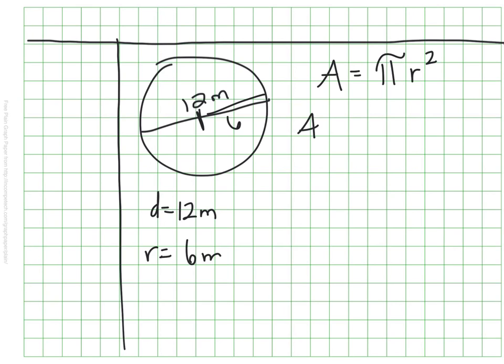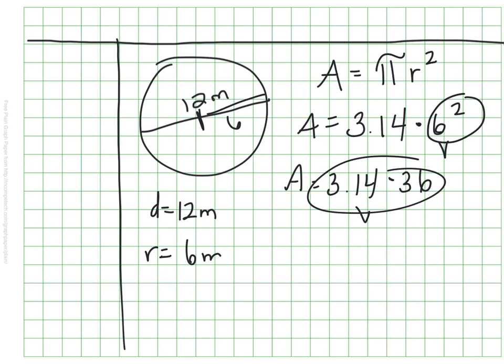So from there, once you know that, you can go ahead and follow the rest of the steps where you would take your radius, and since exponent comes first in PEMDAS, you would do that part first, and multiply it by our representation of pi to get our final answer, which is about 113 and 4 hundredths square meters, or meters square.